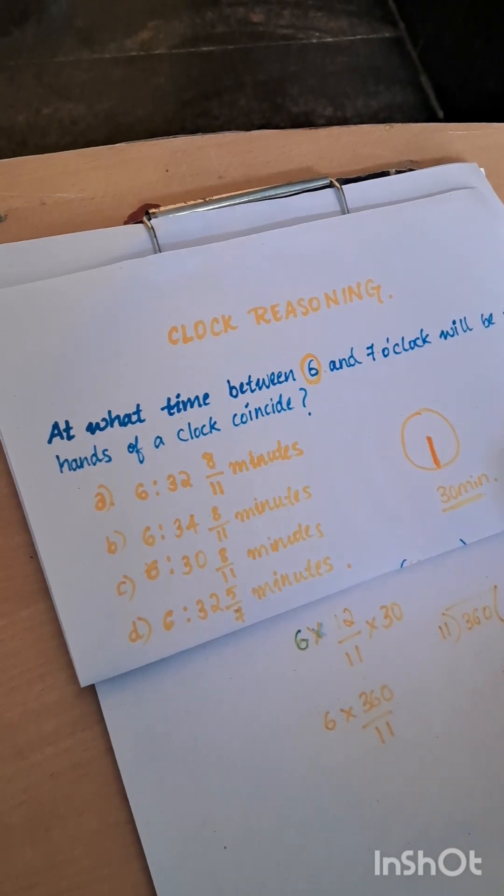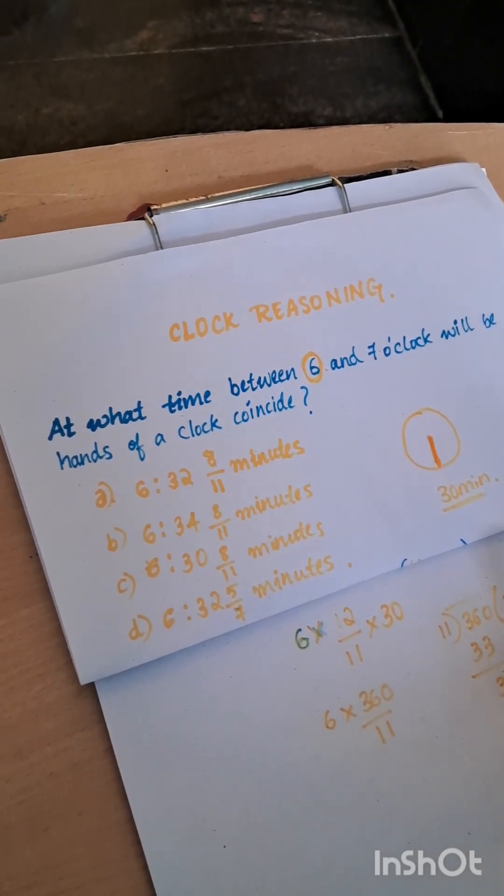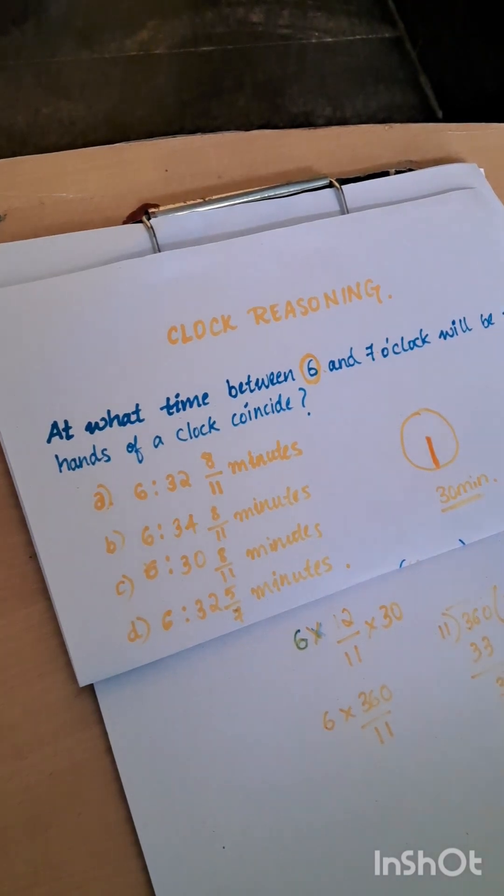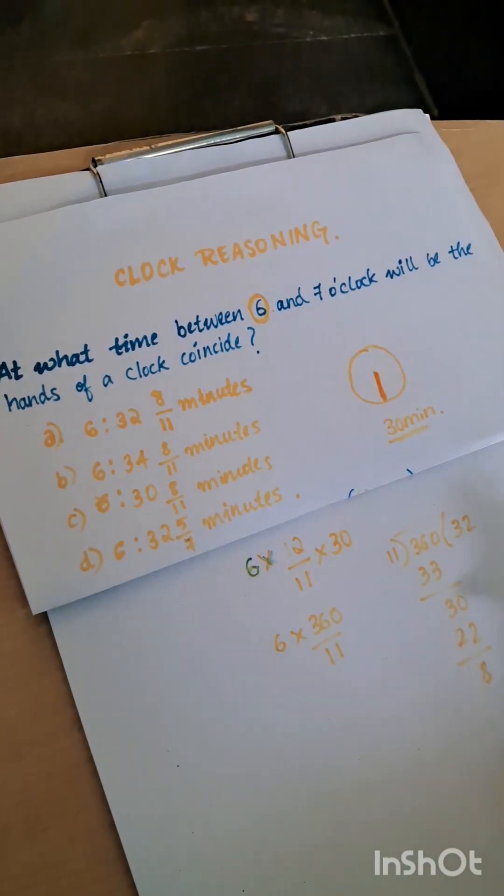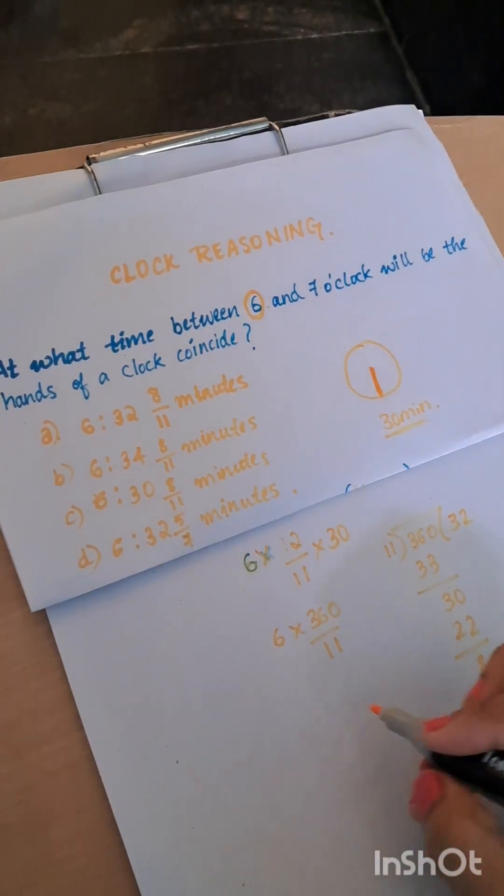11 times 2 is 22, and I'll get the remainder as 8 here. So I will get the remainder as 8, and I will write this in the form of a mixed fraction.